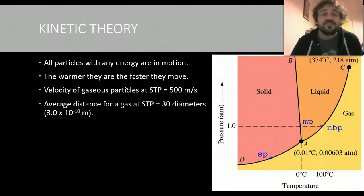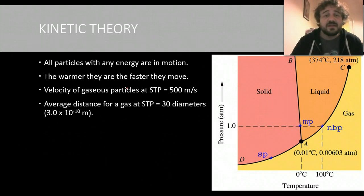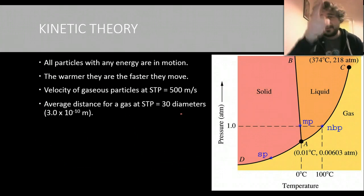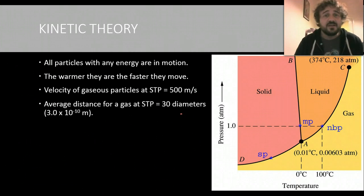So the average distance for a gas, so distance between particles at standard temperature and pressure, is 30 diameters. So 30 widths of those particles apart. Now remember, a carbon dioxide particle, which has a C and two oxygens, is much, much larger than a nitrogen particle, which is just an N.